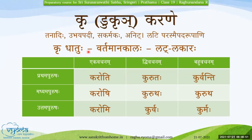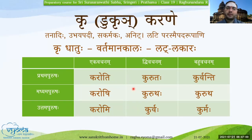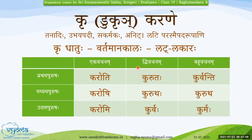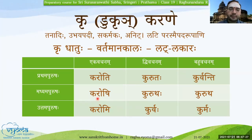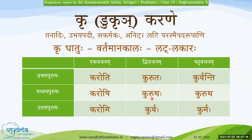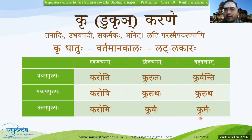Next, Chandakala Bhagini. Please read the title and use Ram Shabda for Prathama Purusha and Yushma Shabda and Asma Shabda for Madhyama and Uttama Purusha. Kr Dhatuhu, Vartamana Kalaha, Lat Lakara. Ramah karoti, Ramah kurutah, Ramah kurvanti. Tvam karoshi, yuvam kurutah, yuyam kurtha. Aham karomi, avam kurvah, vayam kurmah. Very good, dhanyavadah Chandakala Bhagini!